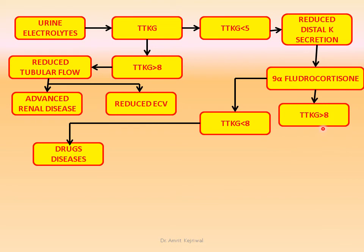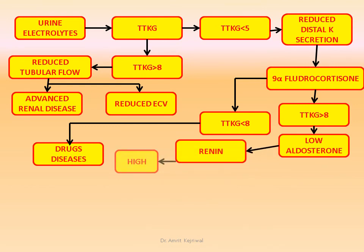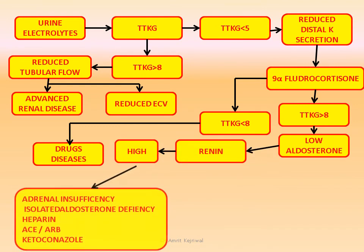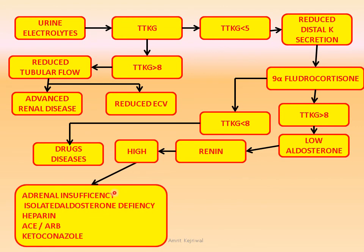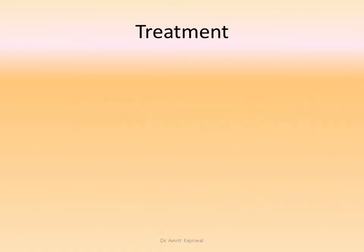Or the TTKG can be greater than 8 after giving fludrocortisone. Check aldosterone — it will be low. Then check renin. If renin is high, it favors adrenal insufficiency, isolated aldosterone deficiency, heparin use, or use of ACE inhibitors, ARBs, or ketoconazole. If the renin is low, it is suggestive of diabetes mellitus, glomerulonephritis, NSAIDs, or beta blockers.